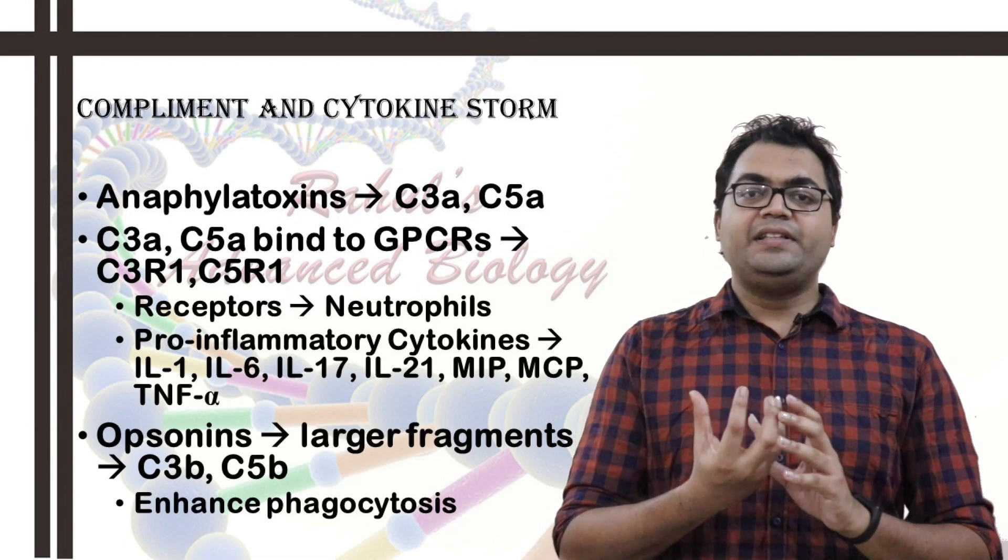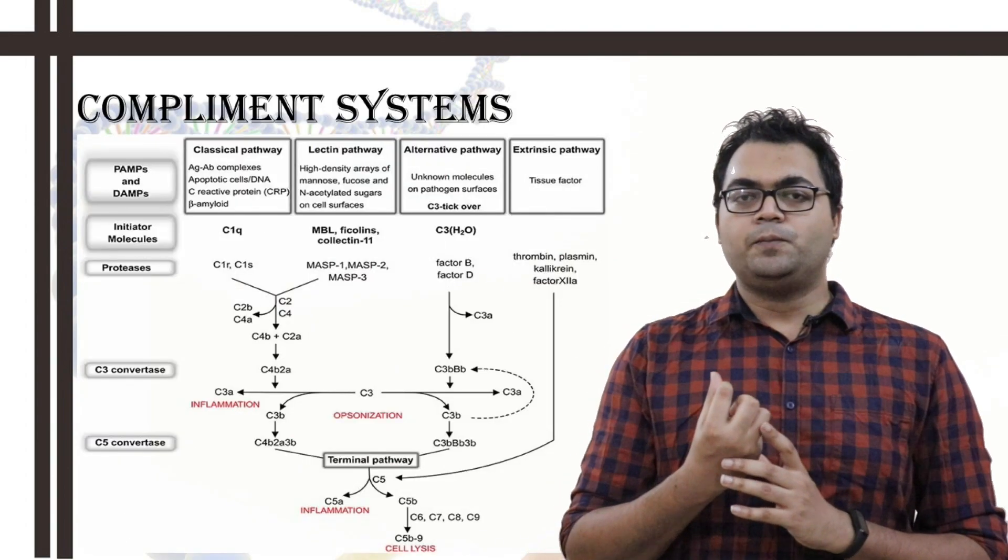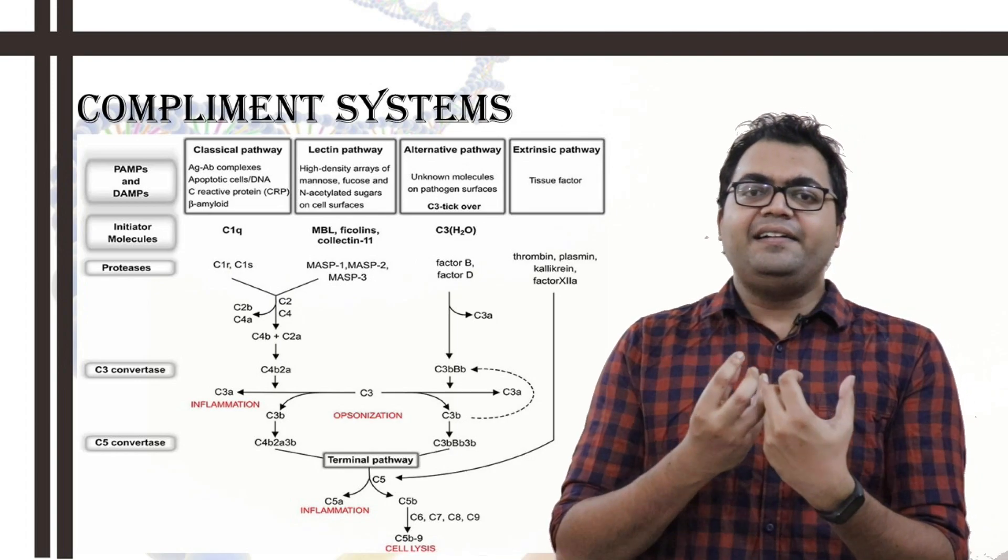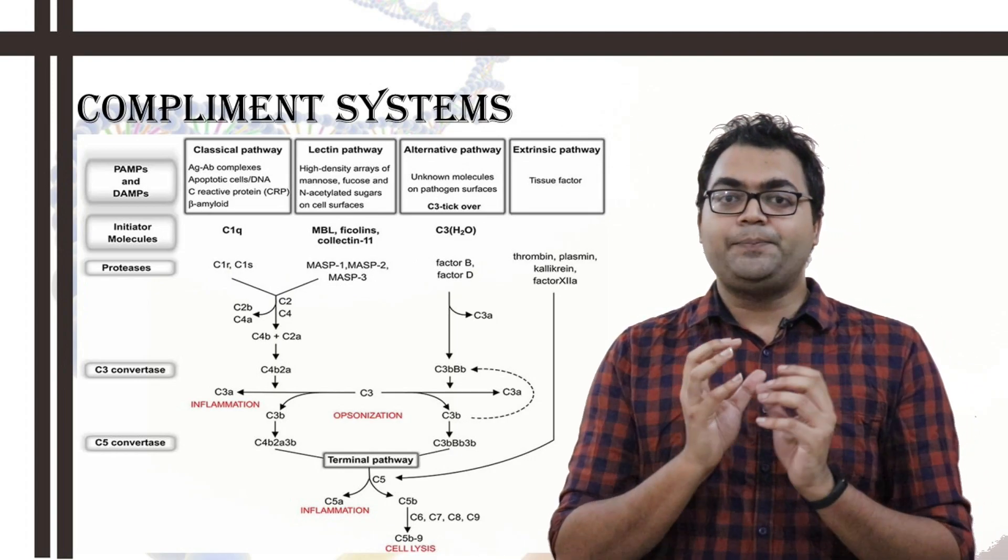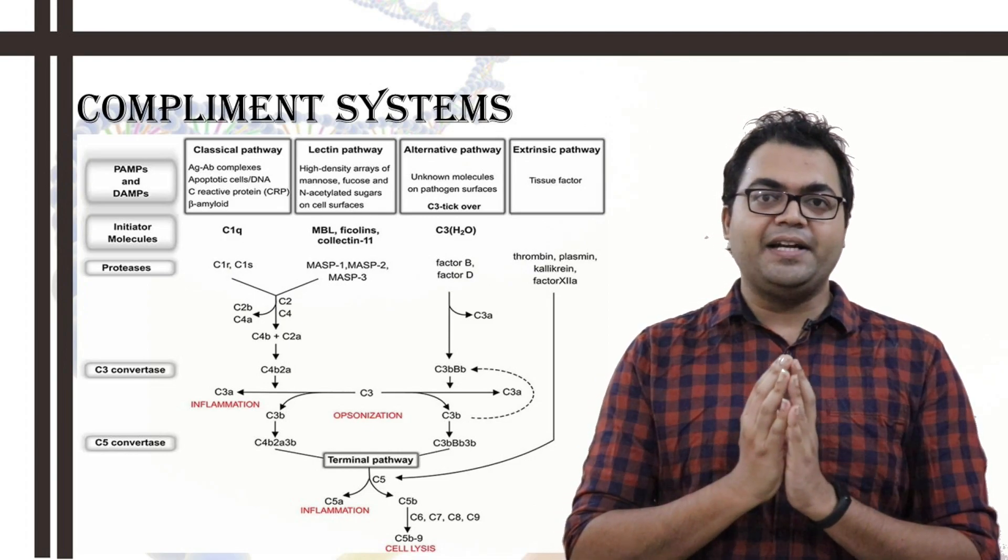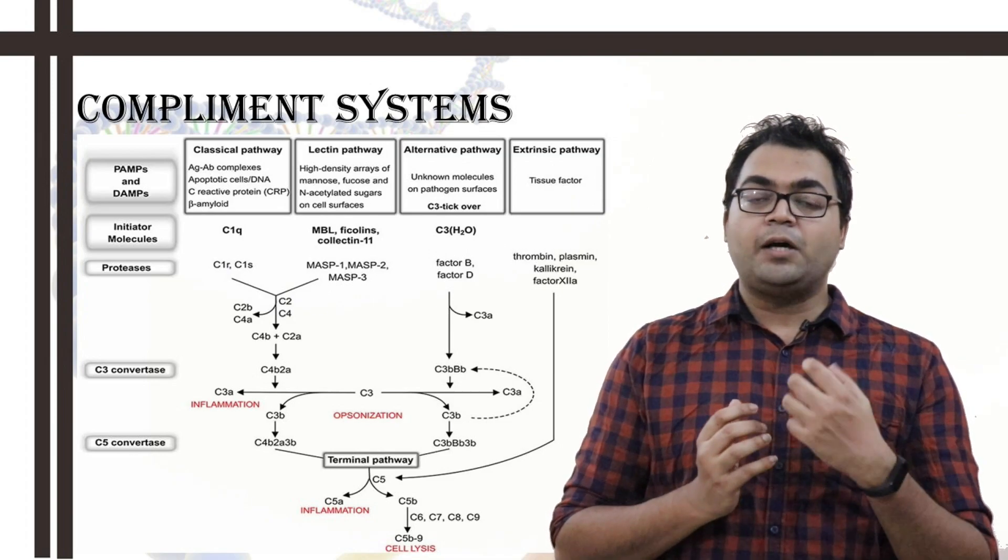Now, in order to begin with the specific classical pathway, what happens is the C1q, it is able to bind the antigen-antibody complex. So, this specific classical pathway belongs to the adaptive immune system because it can only bind to antigen-antibody complex, AG-IgG complex or AG-IgM complex.